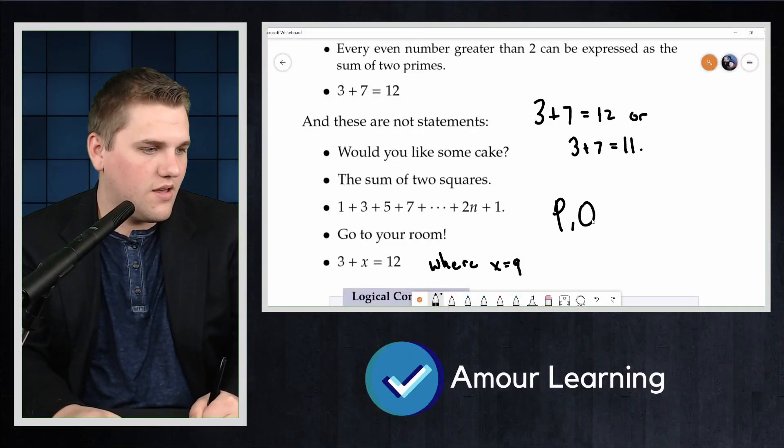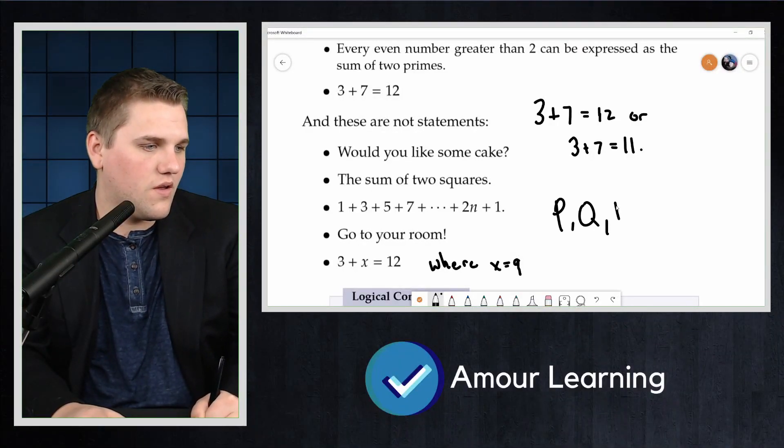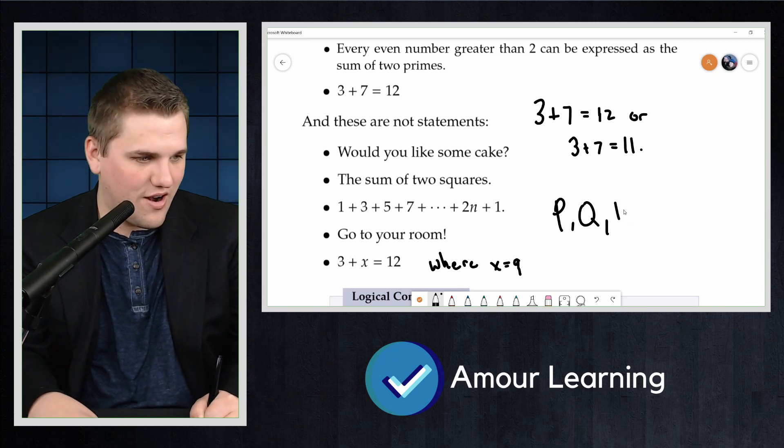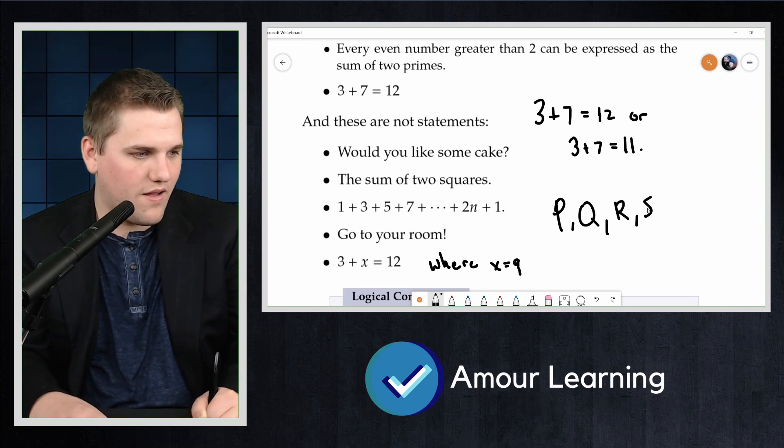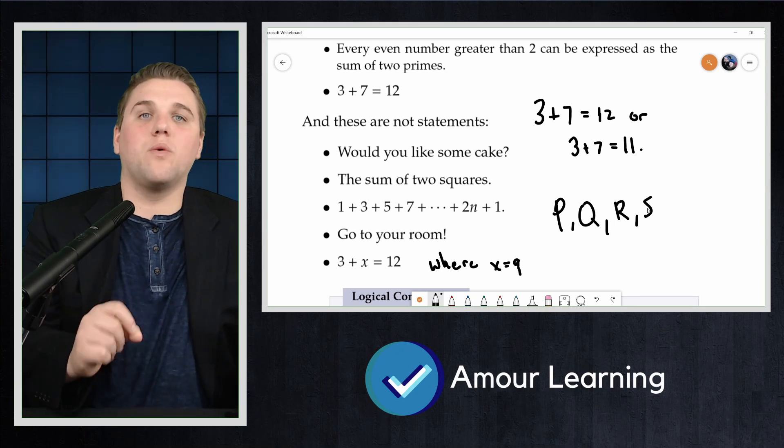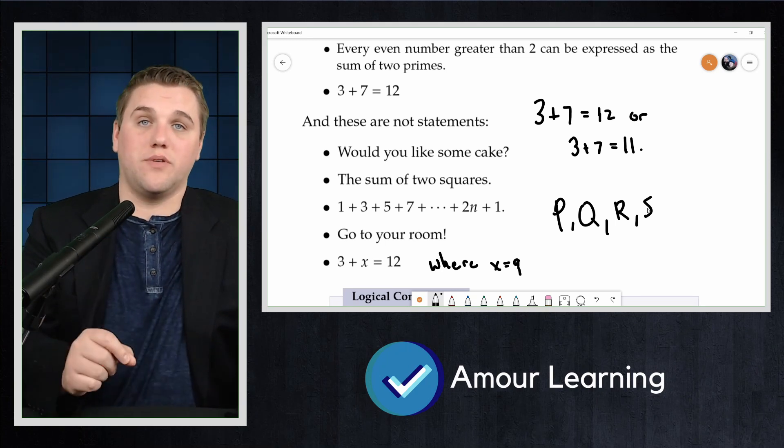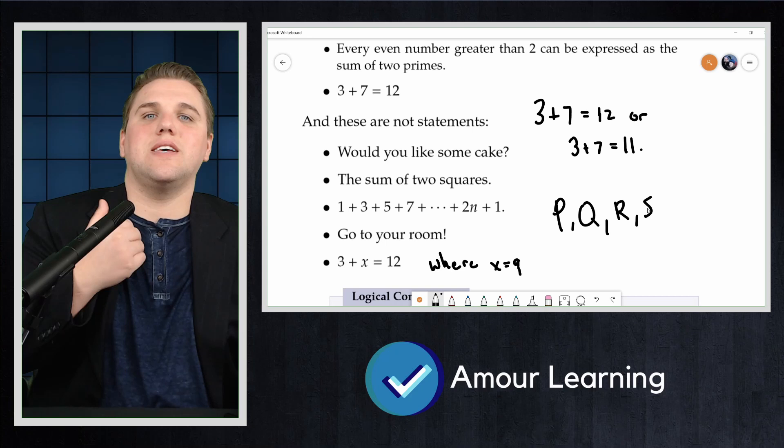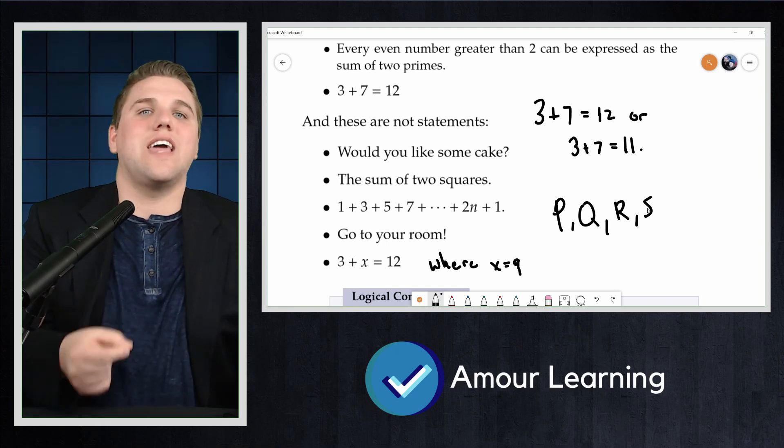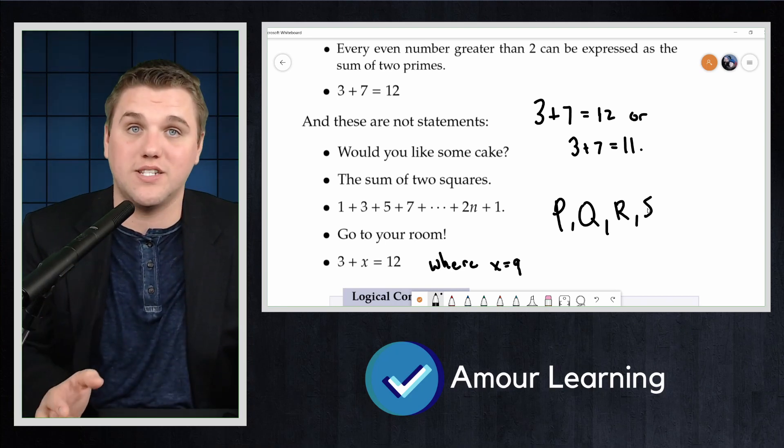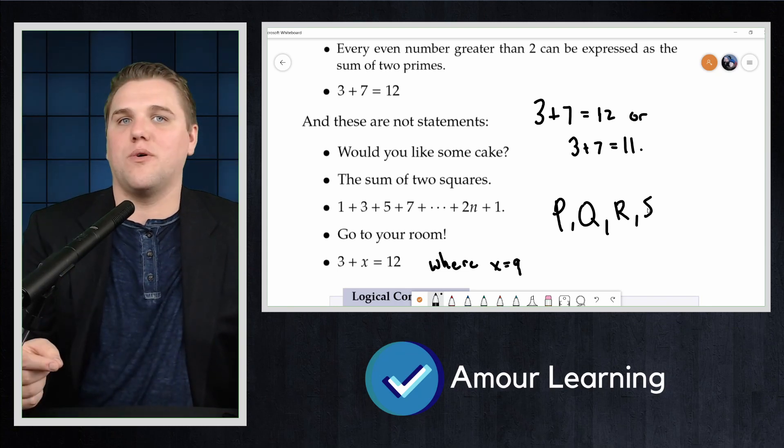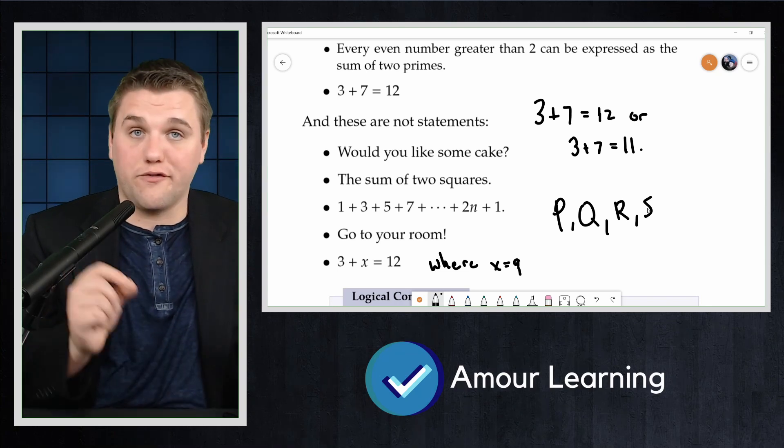P, Q, R, S here. These capital letters work very similarly, except instead of numbers, they are representing the truth value of a certain statement, and the value of the variable is either true or false.